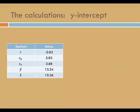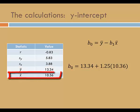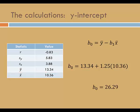Next, let's calculate the y-intercept. The formula for y-intercept is B0 equals y-bar minus B1 times x-bar. Again, I'll plug in values from the table. The mean response is 13.34, the slope is negative 1.25, and the mean explanatory value is 10.36. So, the y-intercept is 26.29.